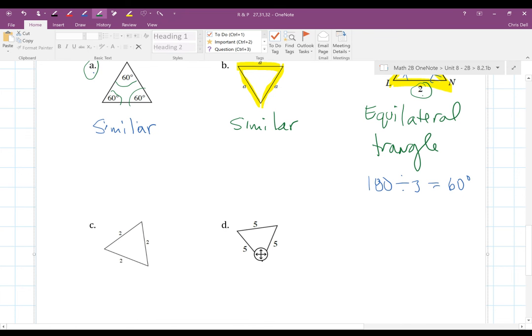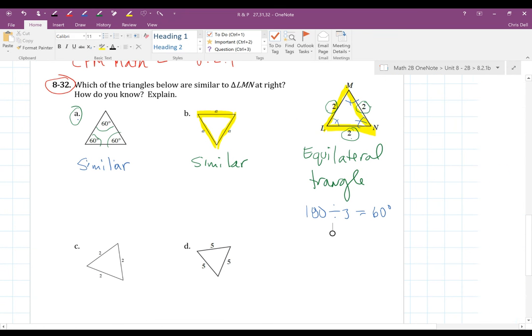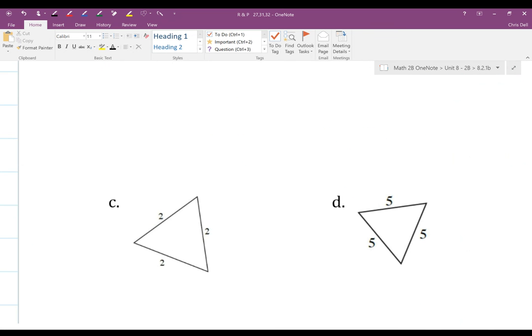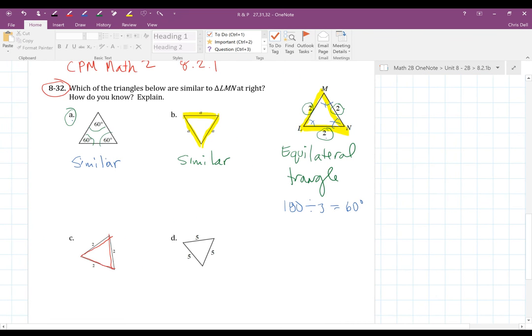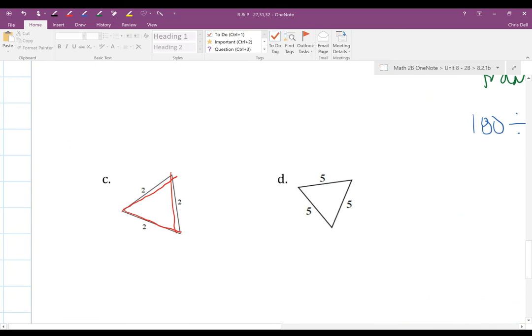And then C. Well, C, if I'm given a triangle here that actually has each of these lengths as two, it's not just similar, it's actually congruent because it's the same as LMN. So I would actually say this one would be congruent.